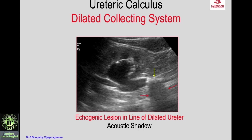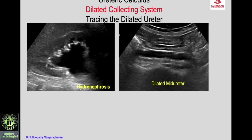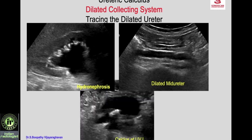Here it is in the upper ureter with dilated ureter above and the dilated pelvicalyceal system. Tracing the dilated ureter we can find out the ureteric calculus. There is dilated pelvicalyceal system, upper ureter and mid ureter. Going down, you see a calculus at the ureterovesical junction. When there is a dilated ureter it can be traced and the cause of obstruction found out — if it is a calculus, it is seen as an echogenic lesion in the line of the ureter with shadowing.